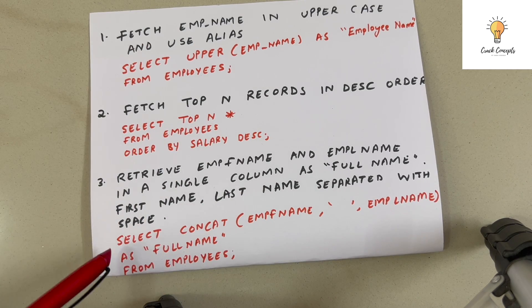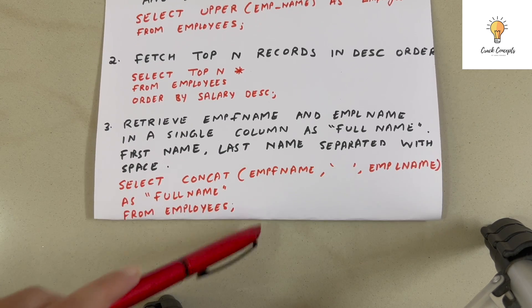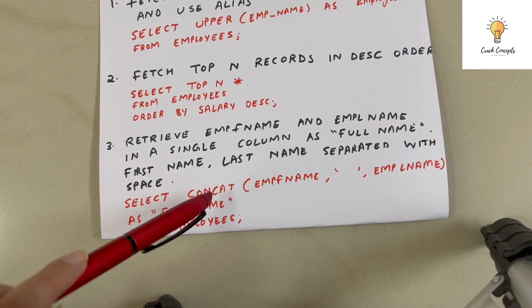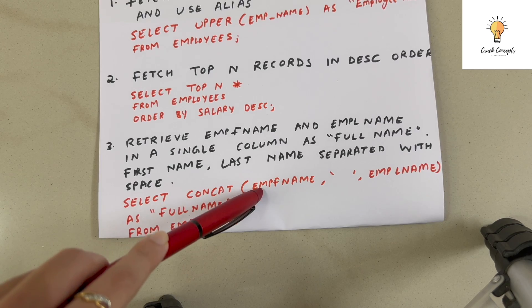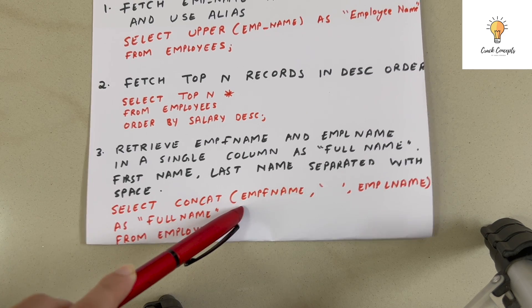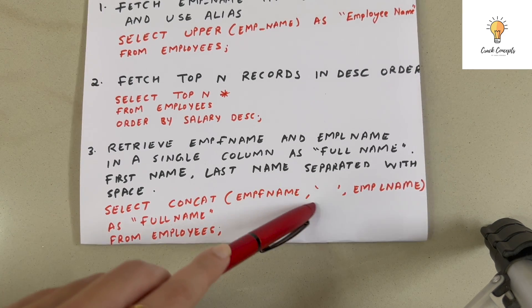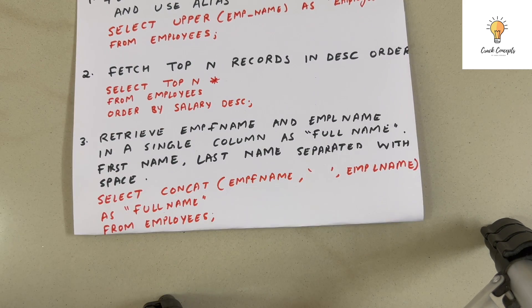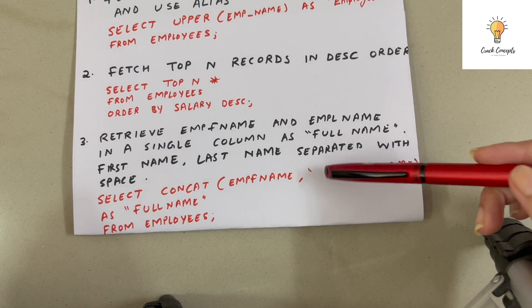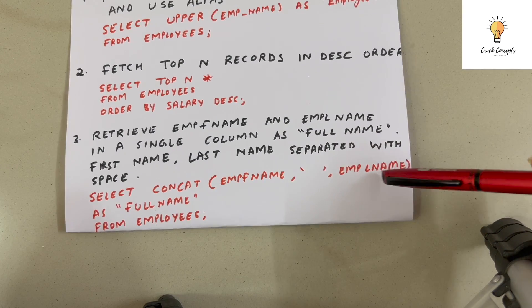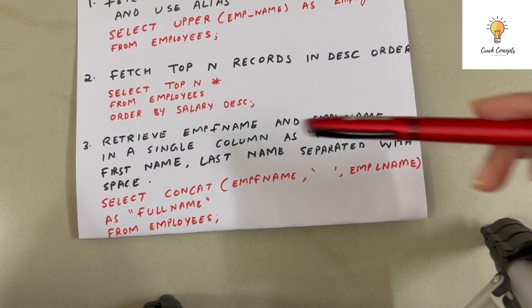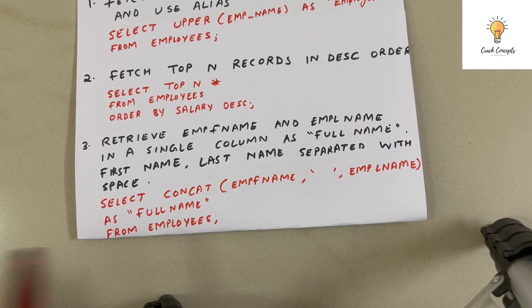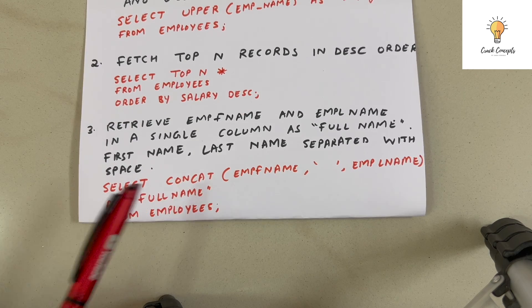The query uses CONCAT. SELECT CONCAT(emp_fname, ' ', emp_lname) AS full_name FROM employees. CONCAT takes the first column name, a space in inverted commas, and the last column name, concatenating first name and last name with a space in between, aliased as 'full name'.